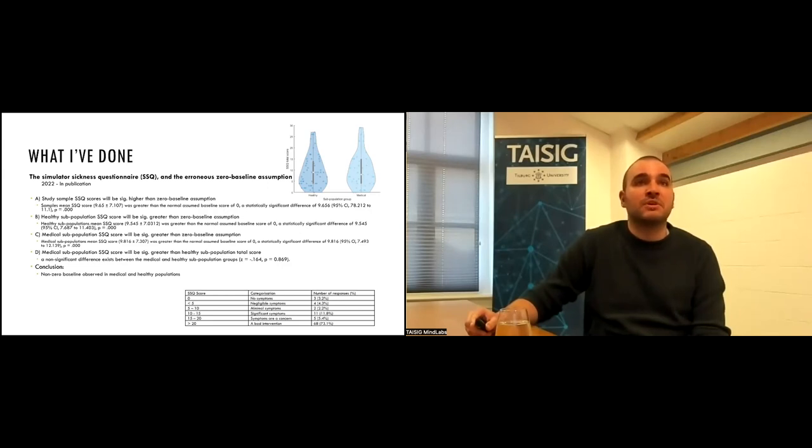But one thing based on our previous work which we were looking at, or what we thought anyway, was that medical subpopulations, for a number of factors such as medication use confounding with simulator sickness answers or questions which are being asked, states of the health condition itself which may confound also, we thought that they would actually score significantly greater than healthy subpopulations' total scores. Although we found this to be incorrect. If you see on the right, the violin chart at the top is the actual distributions of the participants, and you can see they're actually very similar. Although healthy participants did on average score less than the medical population participants, it's certainly not a zero baseline and it's actually nowhere near. If you look at the table down towards the bottom, only three of our 93 participants actually did score a zero baseline. The vast majority of them, you can see, 73 of them actually scored higher.